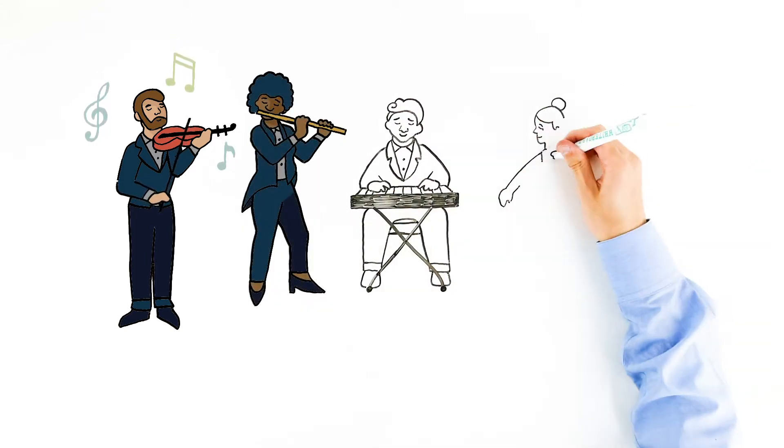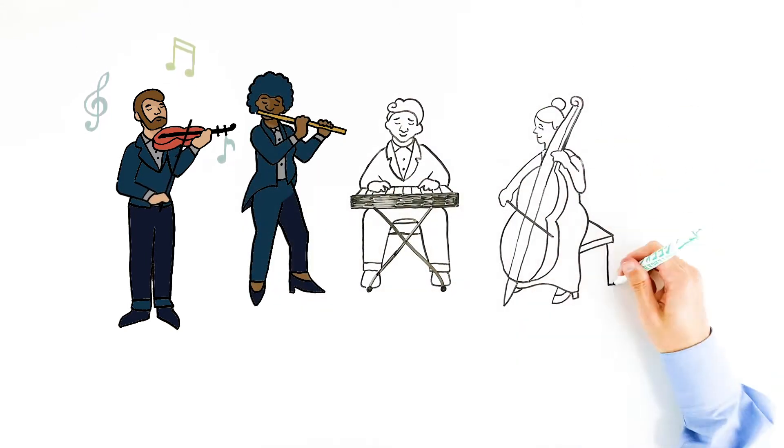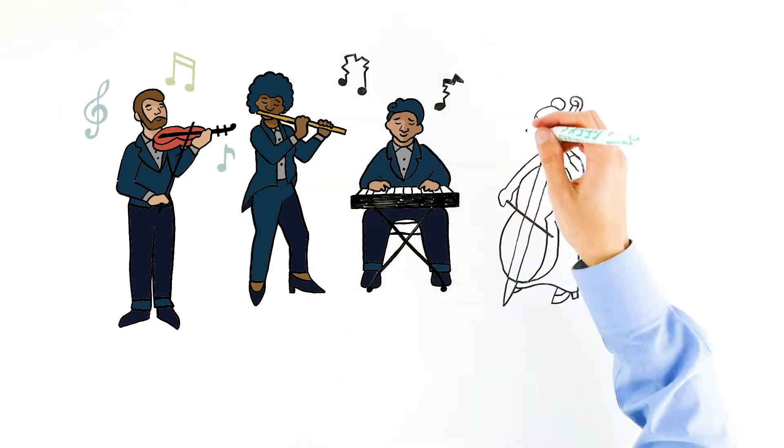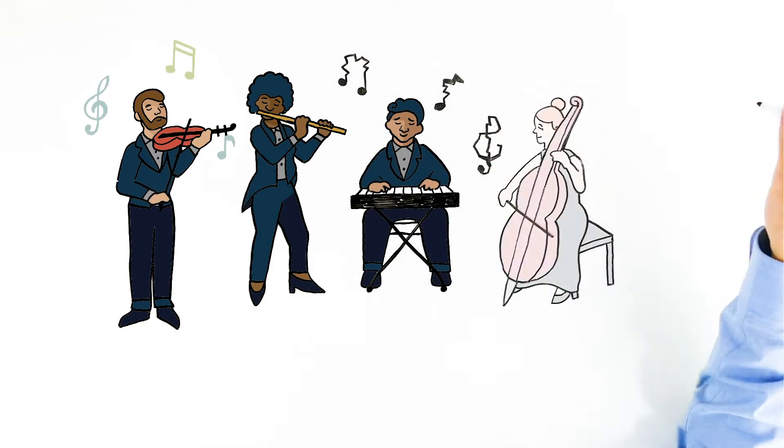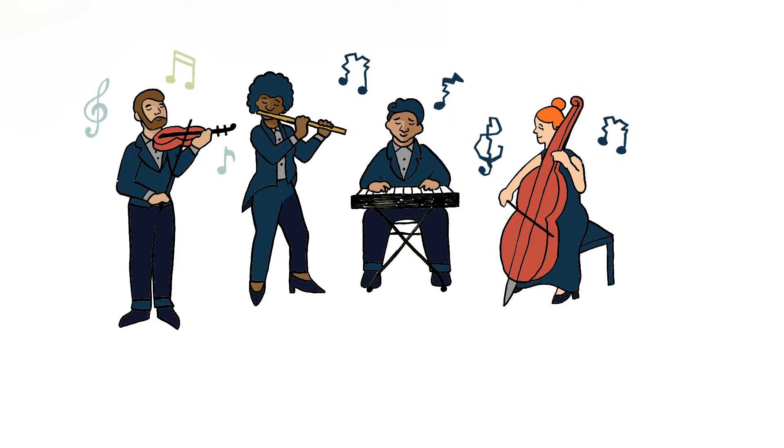Without a conductor, an orchestra doesn't know when to start playing or how long to sustain each note. However, the right leader can get every section on the same page while drawing out the ensemble's best, culminating in something truly dynamic.